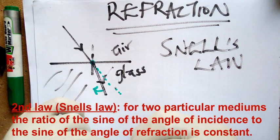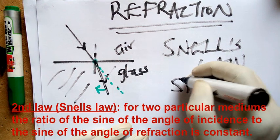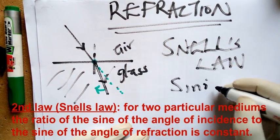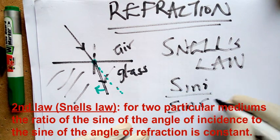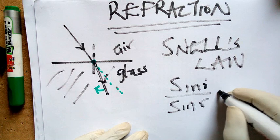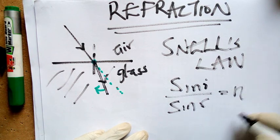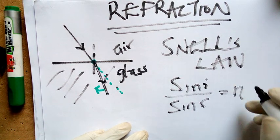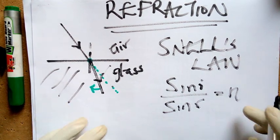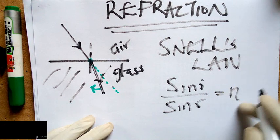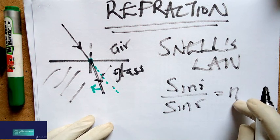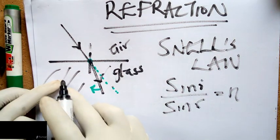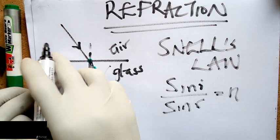So Snell's law, which is the second law of refraction, states that the ratio of the sine of the incidence to the sine of the refraction is actually a constant. And this constant is called the refractive index. So what this means is that this value, whatsoever value you have here for any medium, is the refractive index of the second medium with respect to the first medium.